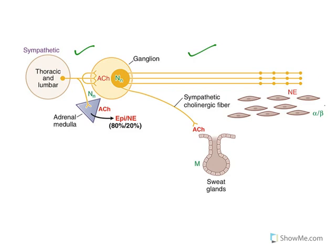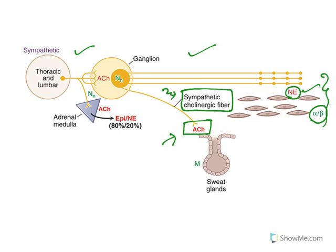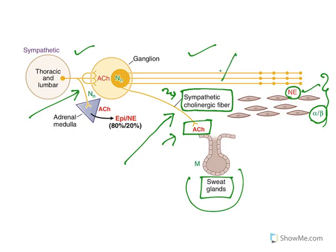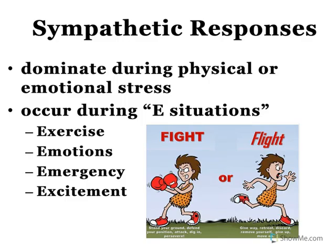The majority of sympathetic neurons are preganglionic-postganglionic neurons going to visceral organs, where the neurotransmitter is norepinephrine acting on alpha and beta receptors. Another exception is the sympathetic cholinergic fiber — at the postganglionic neuron the neurotransmitter is acetylcholine rather than norepinephrine, and this innervation goes to sweat glands. So the two exceptions are: single-neuron to adrenal medulla, and sympathetic cholinergic fiber to sweat glands.